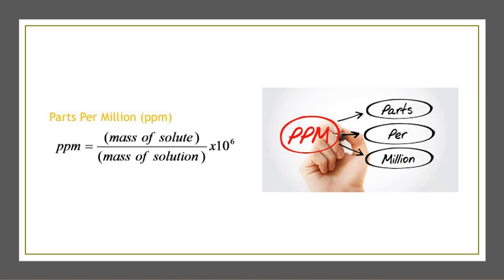Parts per million (PPM): P for parts, P for per, M for million. According to the book, we can take both mass or volume. The formula is: mass or volume of solute divided by mass or volume of solution, multiplied by 10 raised to the power 6, since 10⁶ equals one million.